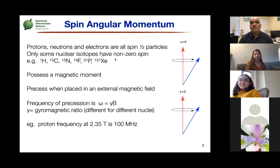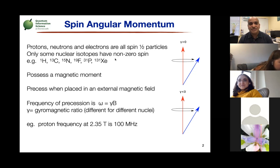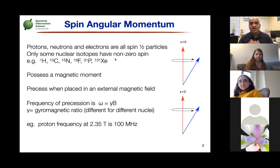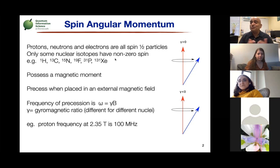NMR comes from the basic principle of what's called spin angular momentum. Particles have this quantum mechanical property called spin. Protons, neutrons, and electrons are all spin-half particles, which essentially means they have two distinct energy levels that we can use. When you have a spin-half particle or two-level system, you can map it onto a qubit.